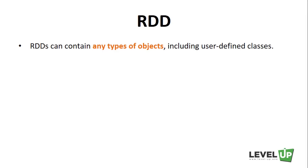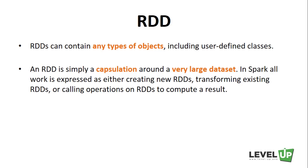In Spark, all work is expressed as either creating new RDDs, transforming existing RDDs, or calling operations on RDDs to compute a result. Under the hood, Spark will automatically distribute the data contained in RDDs across your cluster and parallelize the operations you perform on them.